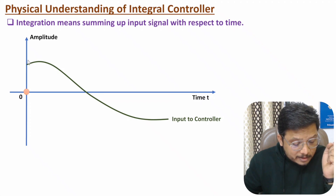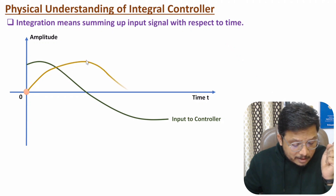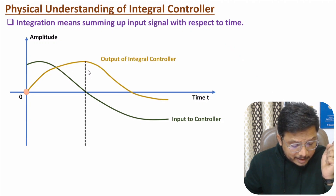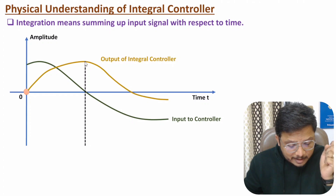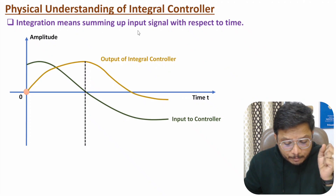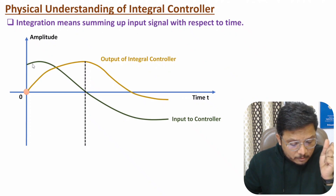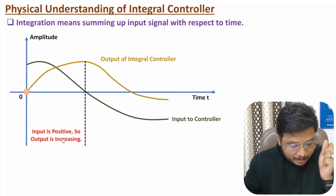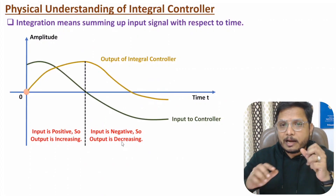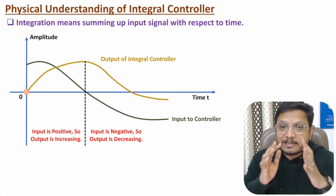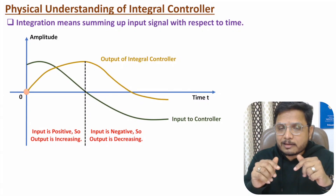When the input signal is positive, the output increases up to the positive value of the input signal. After that, when the input signal becomes negative, the output starts decreasing. So the integral controller produces an output that is the running sum of the input signal with respect to time — increasing when input is positive and decreasing when input is negative.